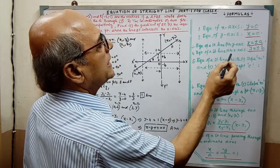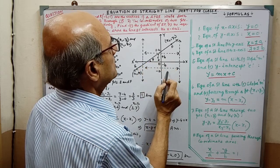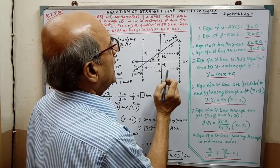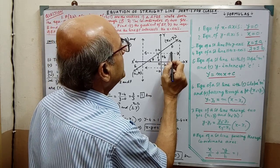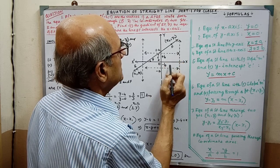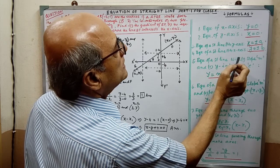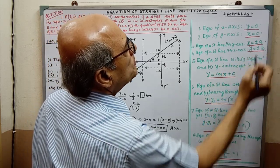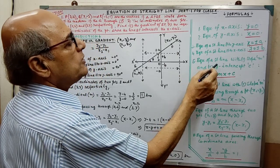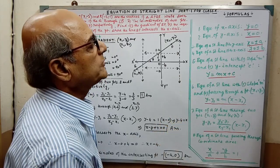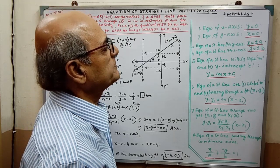The equation of a straight line parallel to the x-axis — one in the upward direction and another in the downward direction — is y equal to plus or minus b. Next, the equation of a straight line with slope M and y-intercept c.